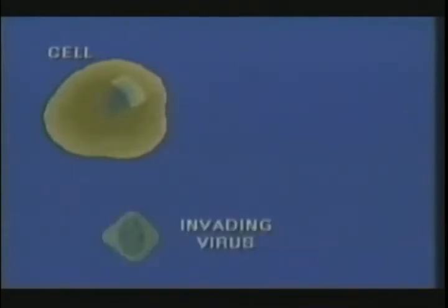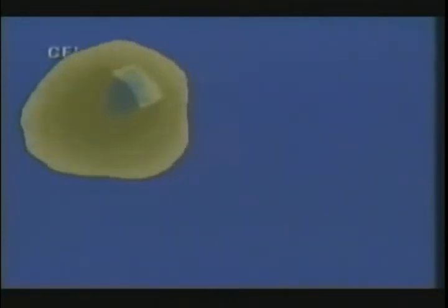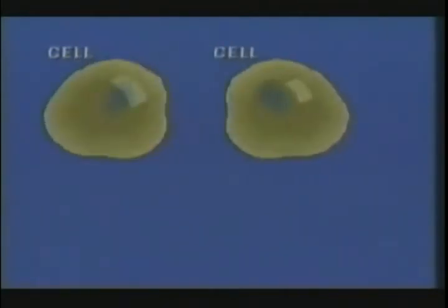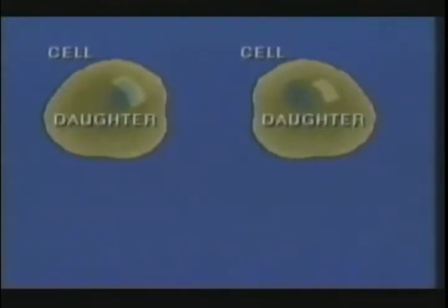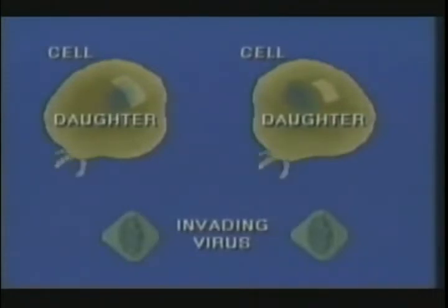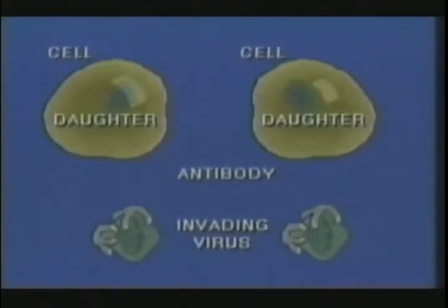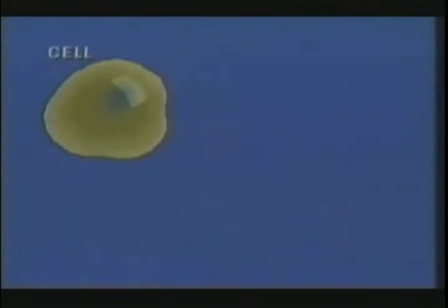Not only must cells be able to control their development, they must be able to perform their functions. They also must accurately pass on to their successors their full range of characteristics and capabilities. Where in the cell are the blueprints stored for all this construction and activity?